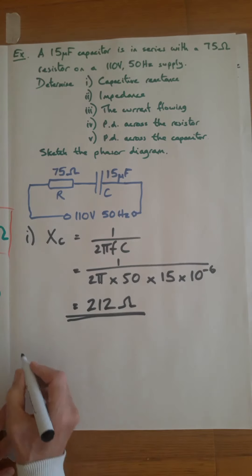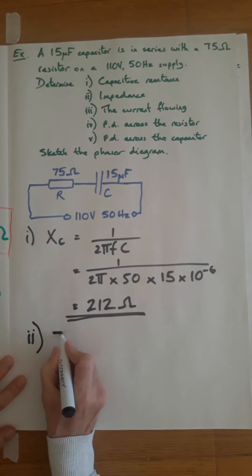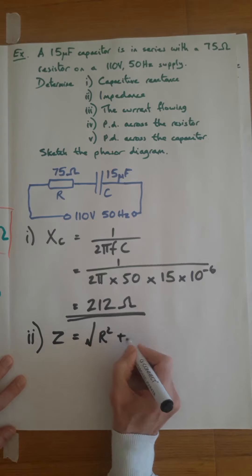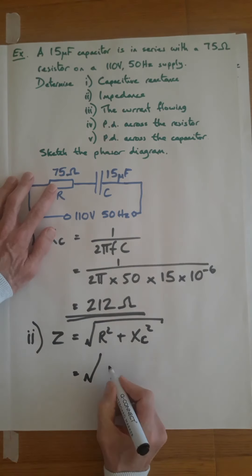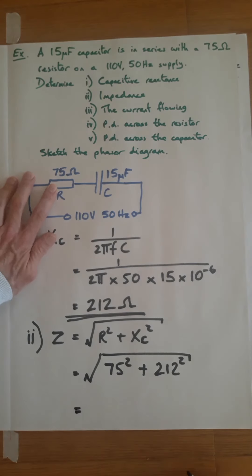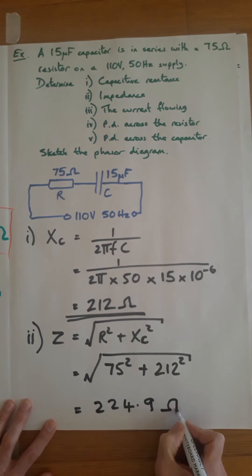Part 2, find the impedance. Z equals the square root of R squared plus Xc squared. Put the numbers in: the resistor is 75 squared plus Xc, which is 212 squared. If you put that in your calculator, you should come out with 224.9 ohms.